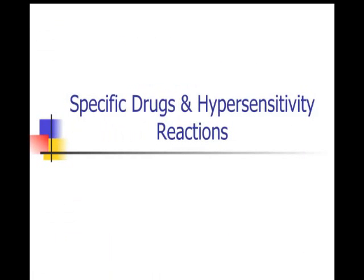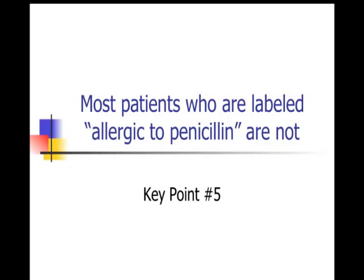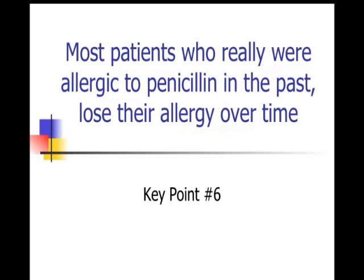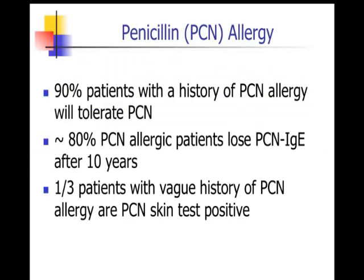Now let's talk about specific drugs. A key point: most patients labeled as allergic to penicillin are not, and most who were truly allergic in the past lose their allergy over time. About 90% of patients with a history of penicillin allergy will tolerate penicillin. About 80% of patients lose their IgE at approximately 10 years, about 50% at 5 years. About a third of patients with vague histories have positive penicillin skin tests, and the presence of specific IgE to penicillin may not equate with clinical drug allergy.